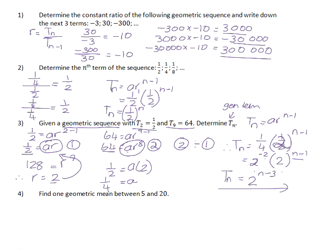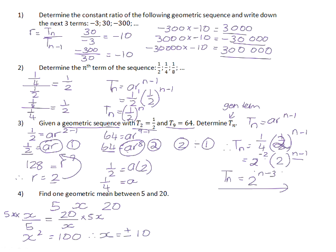Question 4: find one geometric mean between 5 and 20. In other words, we want to insert a number x between 5 and 20 so that 5, x, and 20 form a geometric sequence. Since term 2 divided by term 1 equals term 3 divided by term 2, we multiply both sides by 5x — the lowest common denominator — to get x squared equals 100. Taking the square root of both sides gives x equals plus or minus 10. So the geometric mean is either positive 10 or negative 10, giving sequences 5, 10, 20 or 5, negative 10, 20.